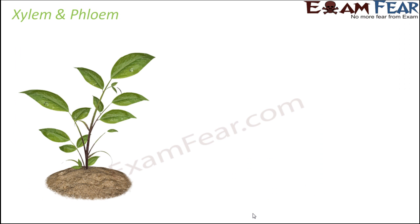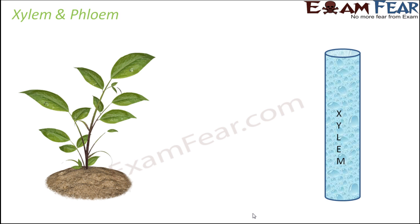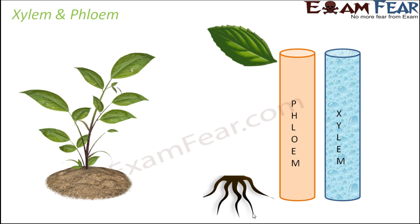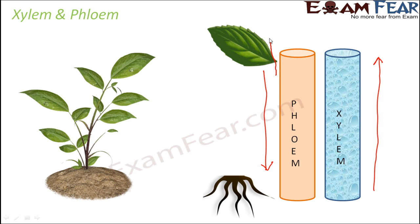In summary, xylem and phloem are tube-like structures that conduct materials between various plant parts. Xylem transports water and minerals only in one direction — from roots toward leaves — while phloem provides bidirectional transport, moving food downward from leaves toward roots and also upward toward higher branches and leaves. Structure-wise, only the tubular elements actually perform conduction: in xylem it is vessels and tracheids, and in phloem it is sieve tubes along with companion cells.